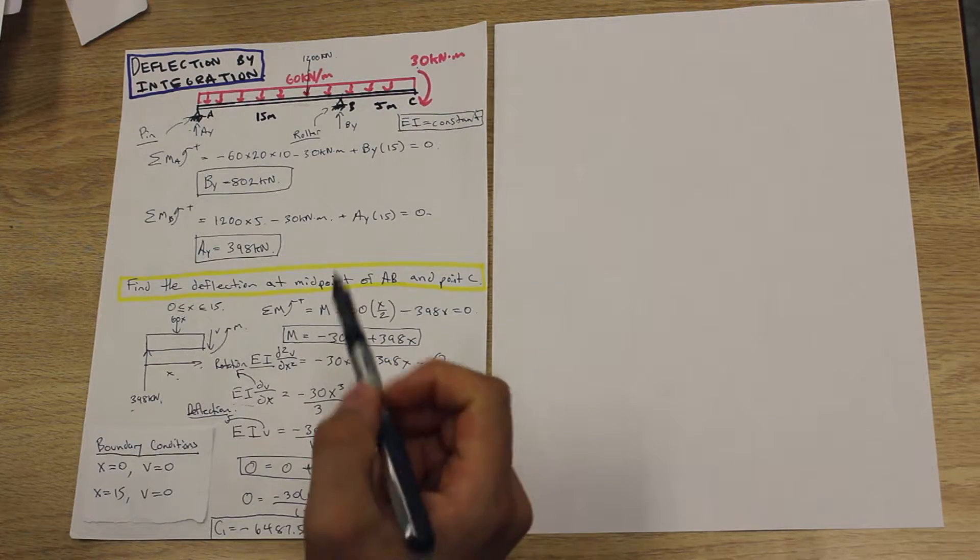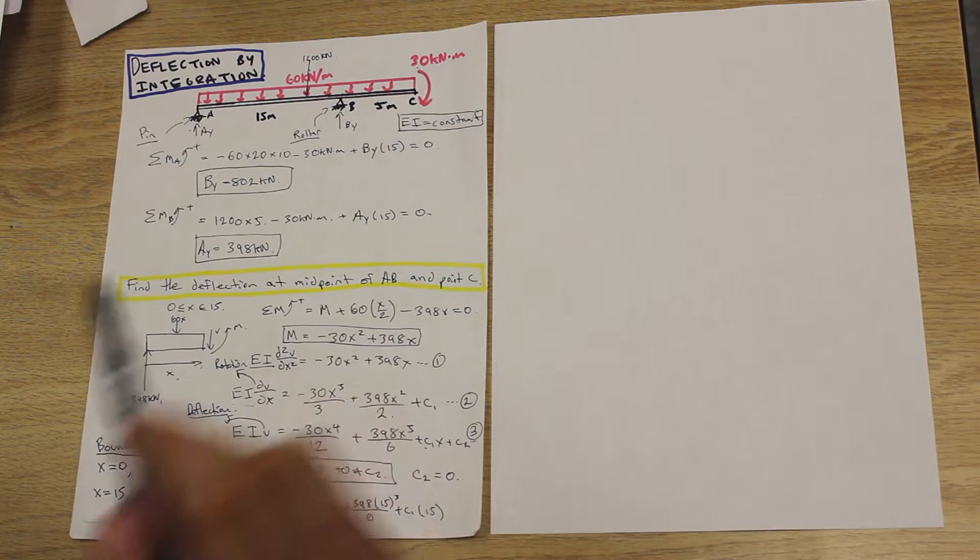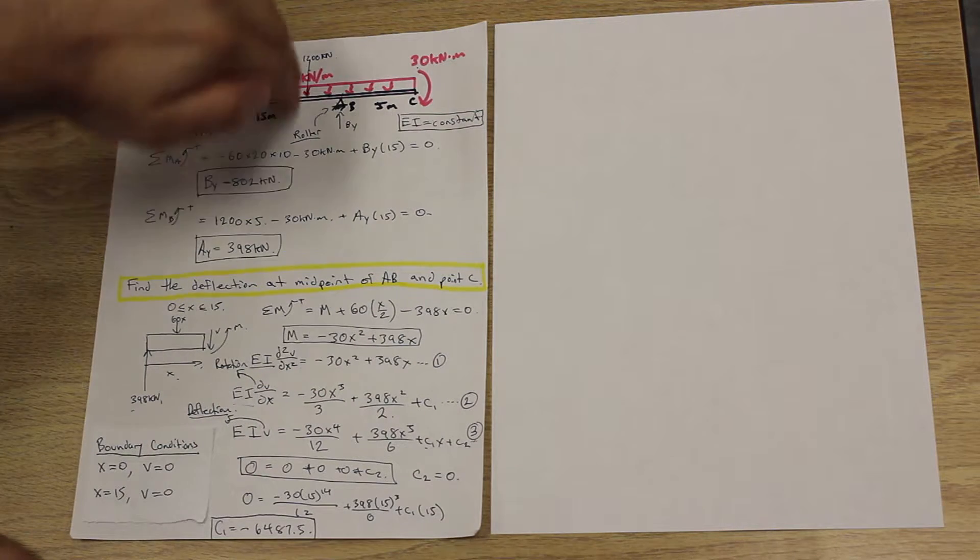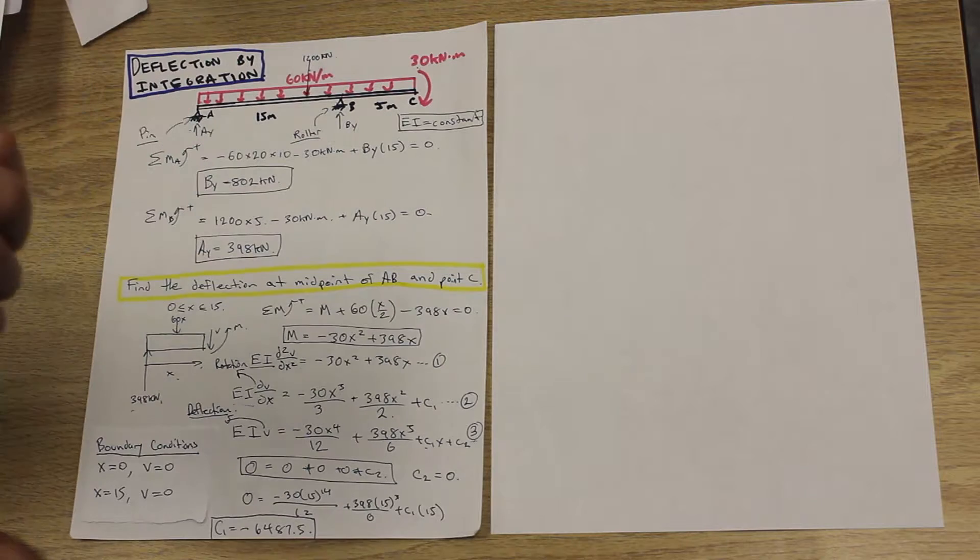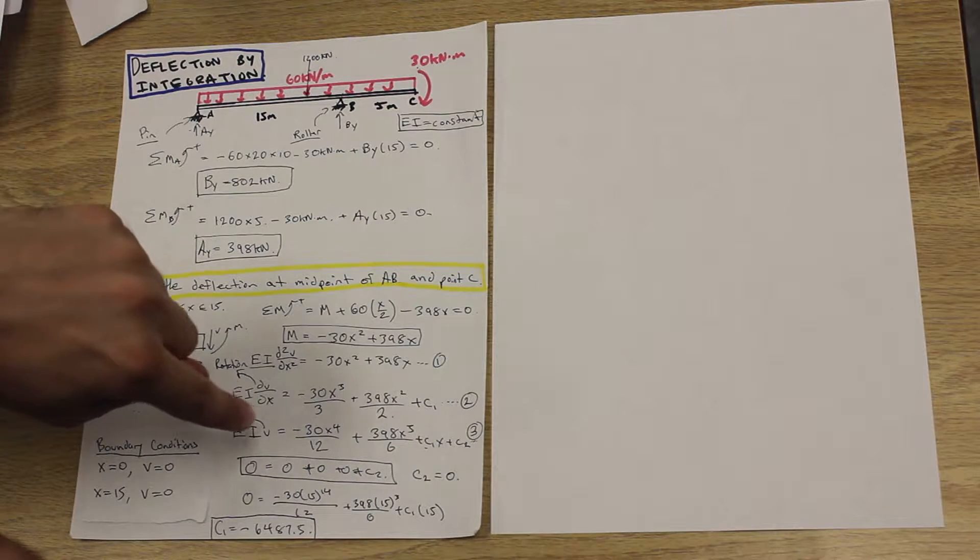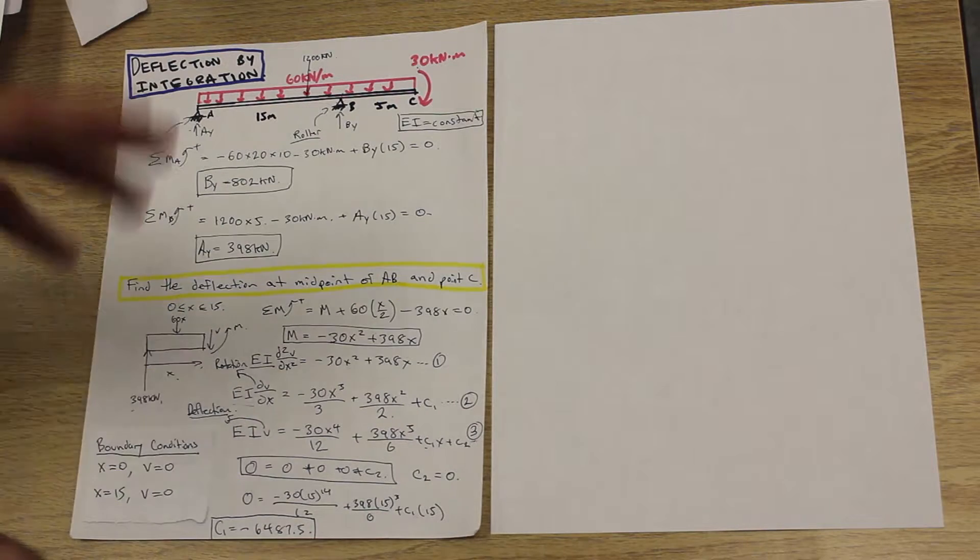So what have we done so far? We found the reactions. We are calculating the deflection currently at the midpoint between A and B. So what we did is we cut the beam here in between A and B. We integrated twice, and we got the formula for the deflection which we derived here.